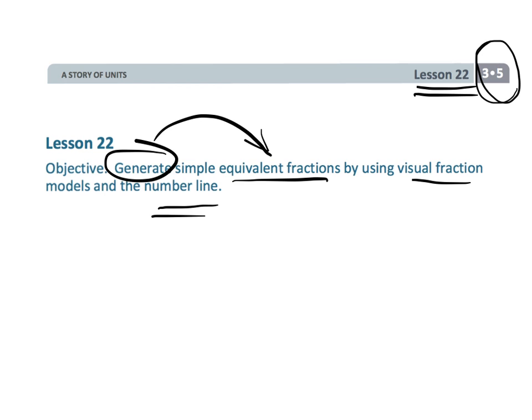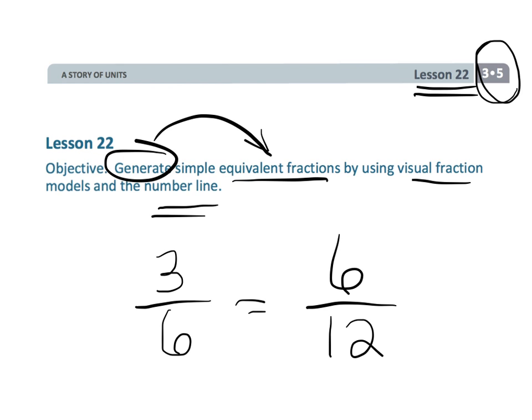The idea is students are going to eventually start getting to that classic algorithm. Let's say we're talking about 3/6, and that's equal to 6/12, and students are going to start recognizing that both of those numbers are doubled. They're going to start getting there in this lesson.